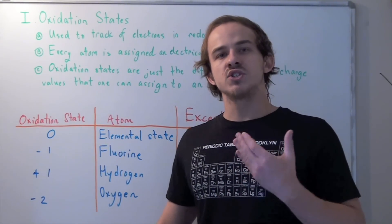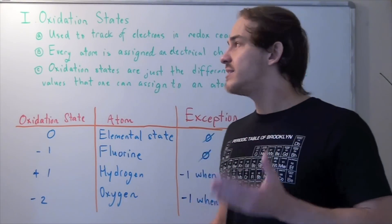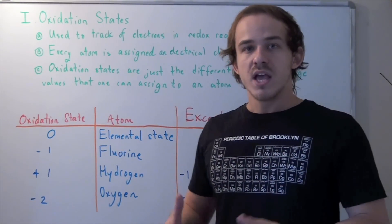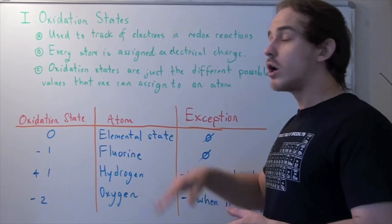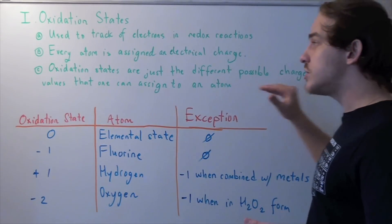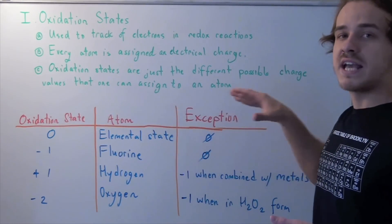This electrical charge is known as the oxidation number, or oxidation state of our atom. Oxidation states are just the different possible charge values that one can assign to a specific atom.